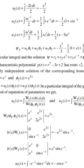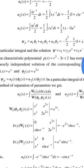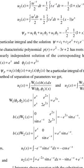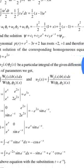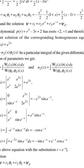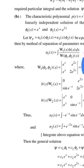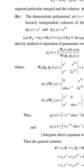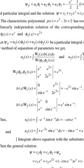ψ_p = u₁ψ₁ + u₂ψ₂ + u₃ψ₃ = (-x²/2)(1) + (-1/2)(1 + x)e^(-x)·e^x + (1/2)(x - 1)e^x·e^(-x) = -x²/2 - 1, which is the required particular integral. The general solution is ψ = c₁ + c₂e^x + c₃e^(-x) + ψ_p.